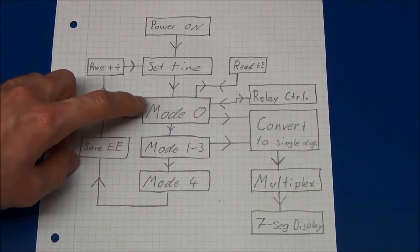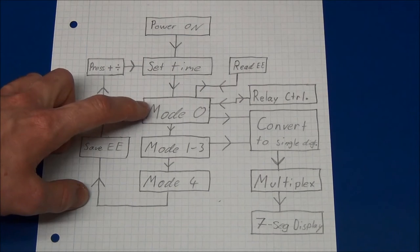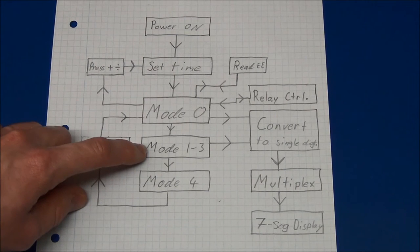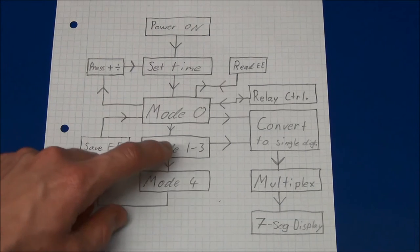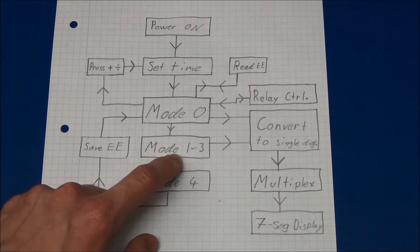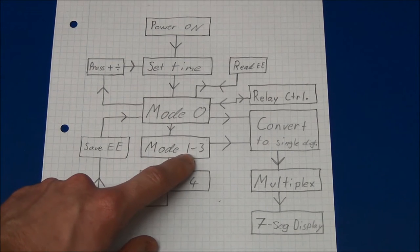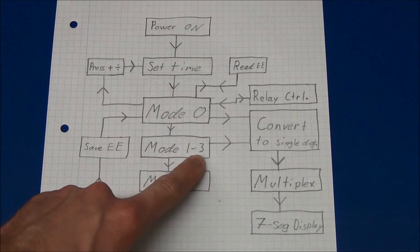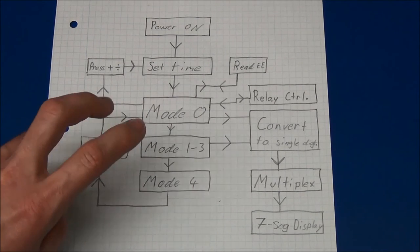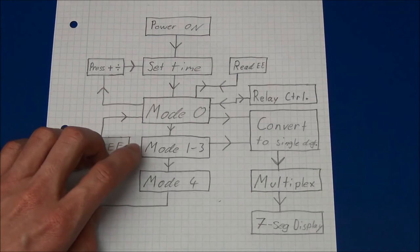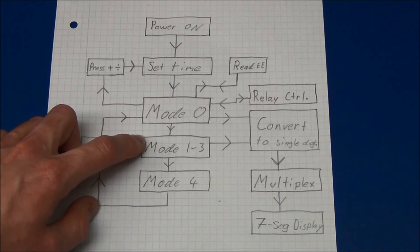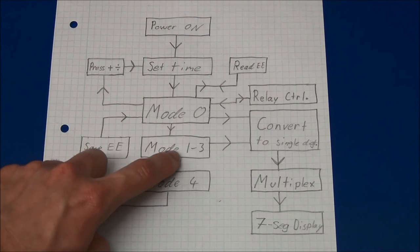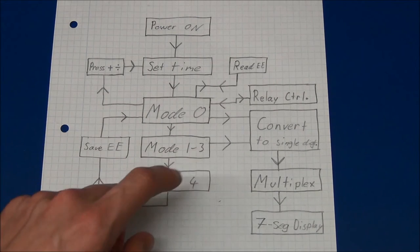But basically mode 0 is the normal operation where it will just display the clock on the display and turn the relay on or off when that's needed. If we enter mode 1 to 3 by pressing the mode button on the unit, we can set a time to turn on, a time to turn off, and a second time to turn on and a second time to turn off, because I added two different on or off times. So we can set it to turn on at 9, turn off at 10, turn back on at 11, and turn back off at 12.